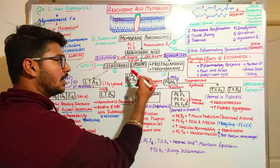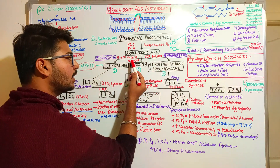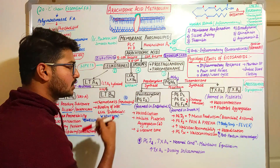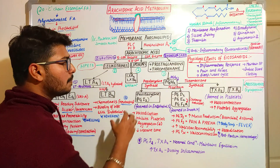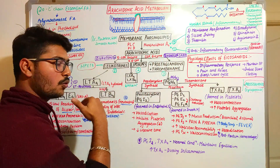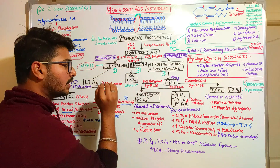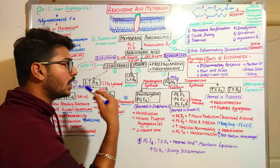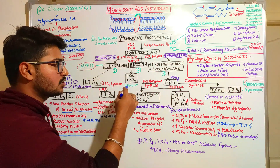Next, lipoxins: when arachidonic acid is hydrolyzed by the 15/12-lipoxygenase enzyme, we see lipoxin A4 and lipoxin B4. Lipoxins are different from leukotrienes and prostaglandins — while leukotrienes and prostaglandins stimulate inflammation, lipoxin is the only compound that decreases the process of inflammation. So lipoxins act as antagonists to inflammation.